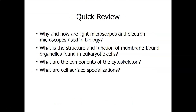Why and how are light microscopes and electron microscopes used in biology? We use light microscopes to see larger cells and larger cell parts. We use electron microscopes to see detail inside cells, to see viruses, and to see bacterial cells in detail, since under a light microscope we can really only see their overall shape. Electron microscopes magnify to a much greater extent.